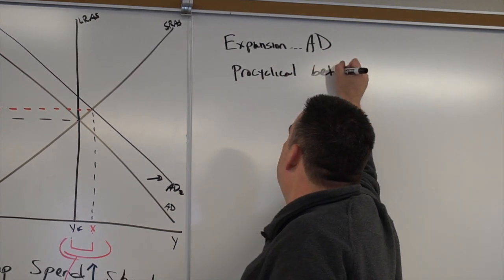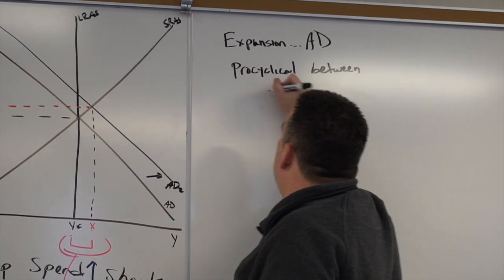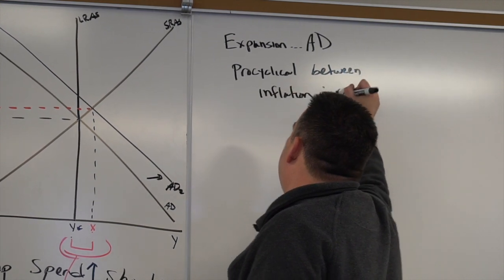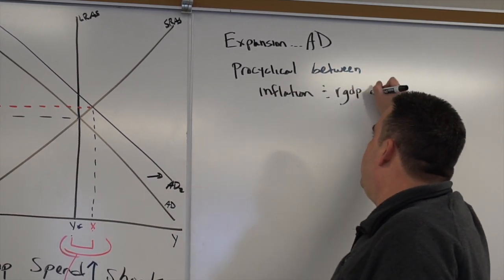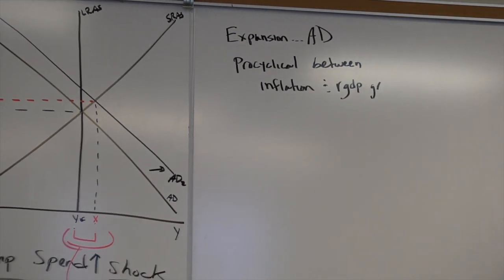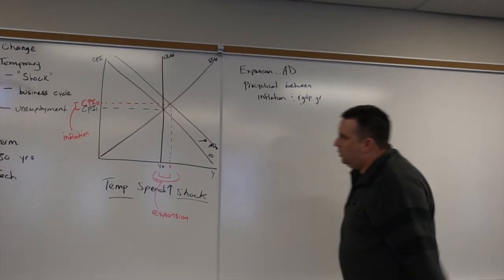Here we see a pro-cyclical relationship. So if we have an expansion brought about by aggregate demand, we have a pro-cyclical relationship between inflation and real GDP growth rates. We have at least our first basic look at a change.